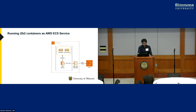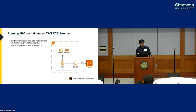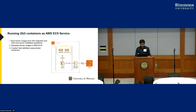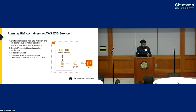To run I2B2 as an AWS ECS service, we built Docker images from the I2B2 web client and web server source code by following installation guidelines. Then we uploaded the Docker images to AWS ECR, which is a private repository that stores, encrypts, and manages Docker images. Using those Docker images, we created task definitions — simple text files in JSON format that describe one or more containers making up the application. We can also define environment variables and port mappings for each container. Then we created an ECS cluster where we run I2B2 as a service task.